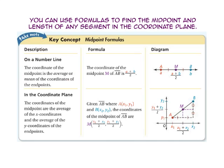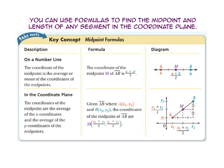On a number line, the coordinate of the midpoint is the average of the coordinates of the endpoints. So m, the midpoint, is a plus b divided by 2. In the coordinate plane, the coordinates of the midpoint are the average of the x-coordinates and the average of the y-coordinates of the endpoints. We add the x-coordinates and divide by 2 to get the x-coordinate of the midpoint, and we add the y-coordinates and divide by 2 to get the y-coordinate of the midpoint.